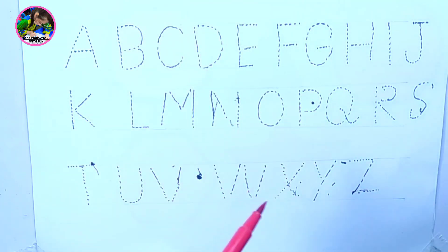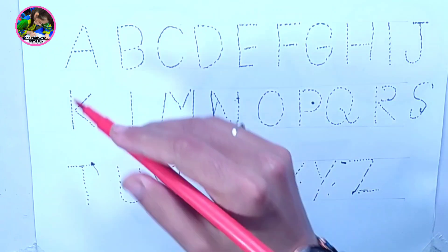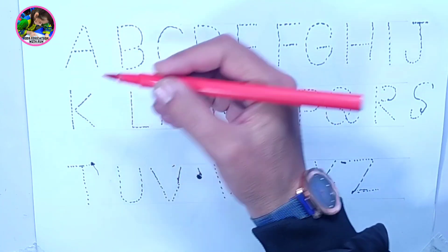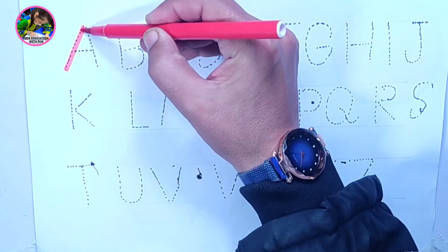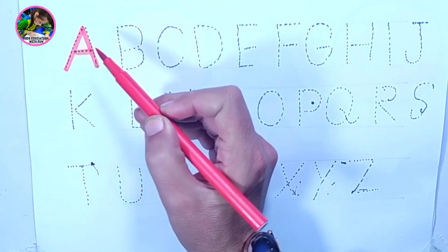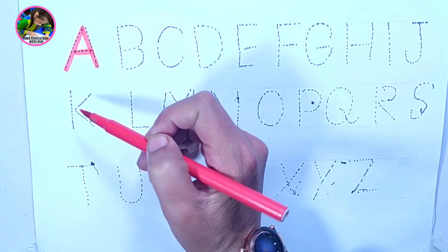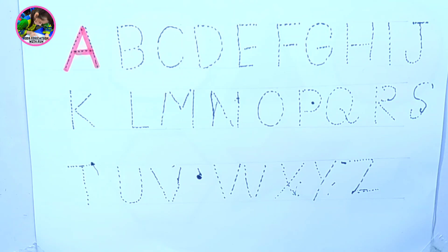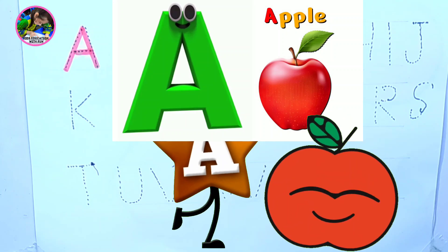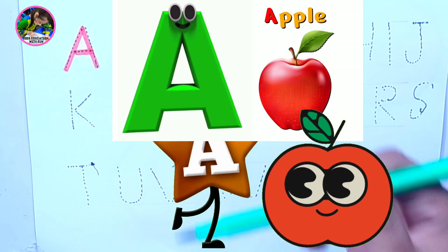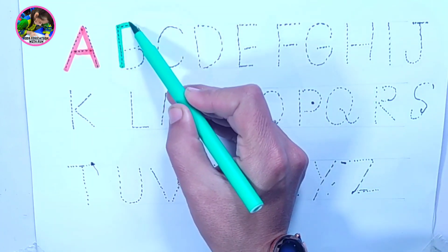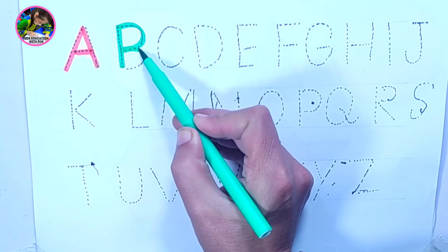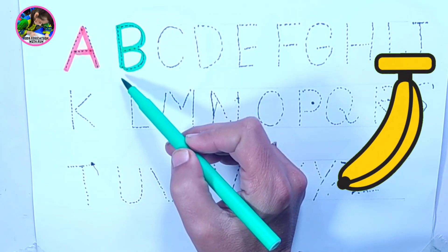Letters. Red color — letter A. A is for Apple. Light green color — letter B. B is for Banana.